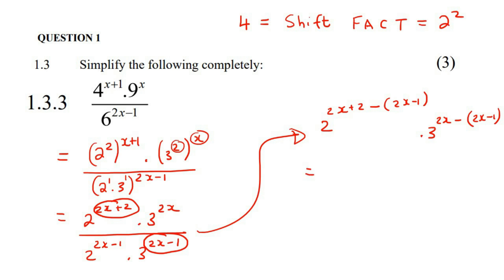Okay, and now you're just going to simplify. So you're going to say 2 to the power of 2x plus 2. Then this minus is going to go into both of those. So it'll become minus 2x plus 1, because a minus and a minus, oh, let's write that a bit better, becomes a plus.